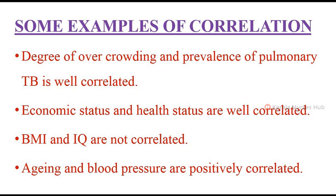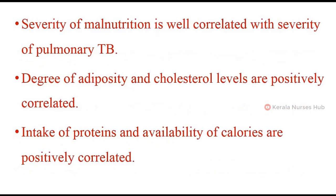Aging and blood pressure are positively correlated — as age increases, there are chances of increased BP. The severity of malnutrition is well correlated with the severity of pulmonary TB; as the severity of malnutrition increases, the severity of developing pulmonary TB also increases. The degree of adiposity and cholesterol levels are positively correlated. The intake of proteins and availability of calories are also positively correlated, since proteins provide the highest calorie, so when protein intake increases, the availability of calories also increases.